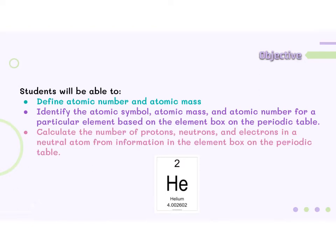By the end of this lesson, students will be able to define atomic number and atomic mass, identify the atomic symbol, atomic mass, and atomic number for a particular element based on the element box on the periodic table, and calculate the number of protons, neutrons, and electrons in a neutral atom from the information in the element box on the periodic table.